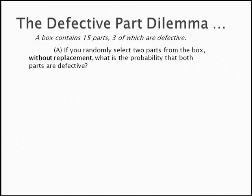Part A asks, if you randomly select two parts from the box without replacement, what is the probability that both parts are defective? This is without replacement, so it is dependent probability. Immediately, you should recognize that two things are going to happen. First, the sample space will decrease with each event, and the likelihood of success will also decrease.